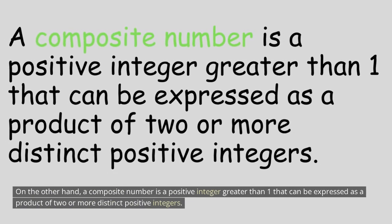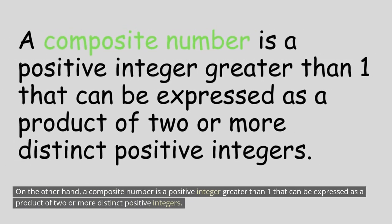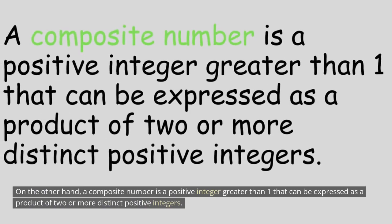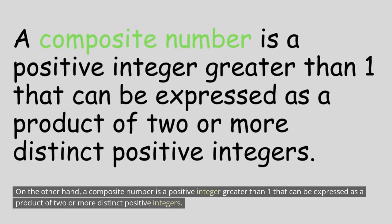On the other hand, a composite number is a positive integer greater than 1 that can be expressed as a product of two or more distinct positive integers.